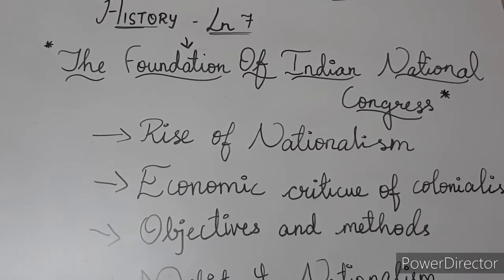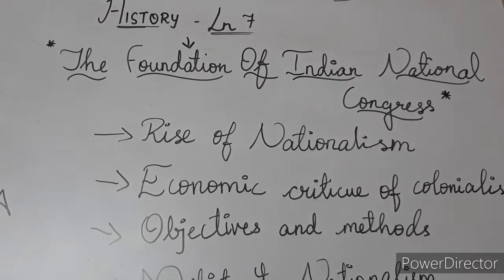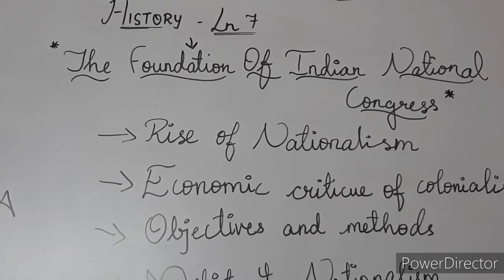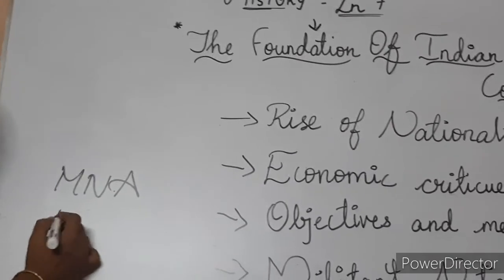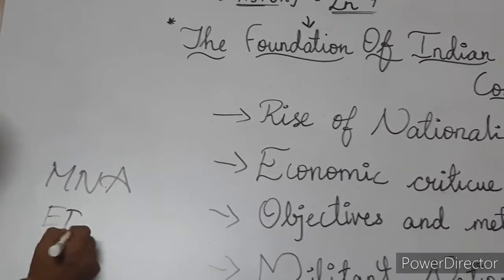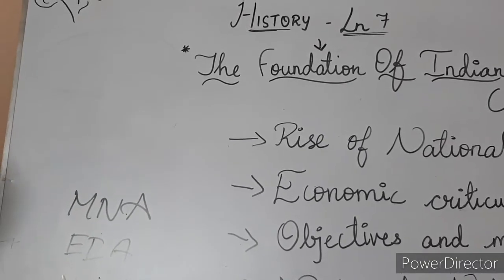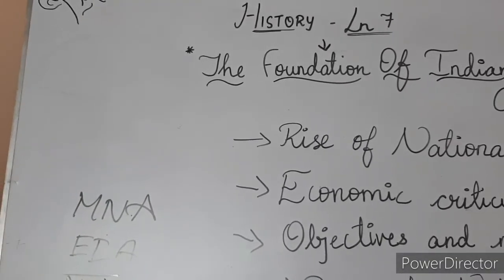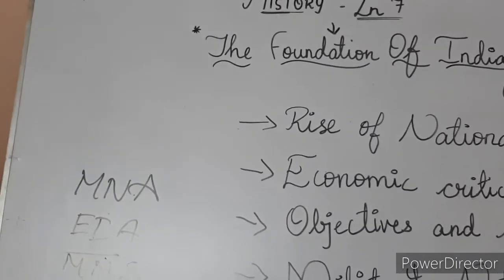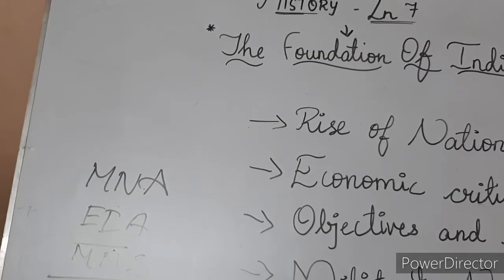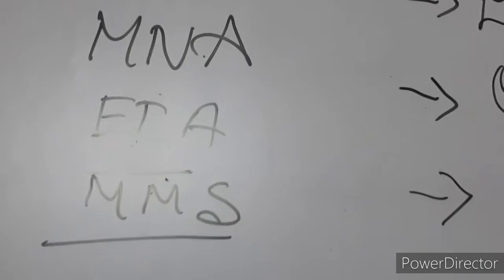Organizations like the Madras Native Association, the East India Association, Madras Mahajana Sabha, Poona Sarvajanik Sabha, and the Bombay Presidency Association all started to raise nationalism all over India.